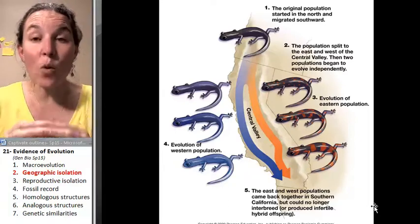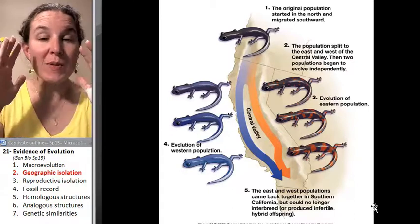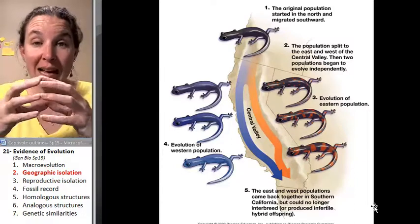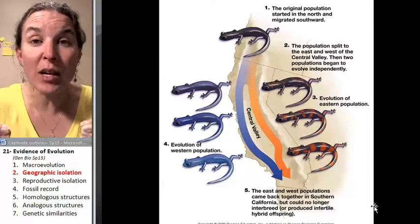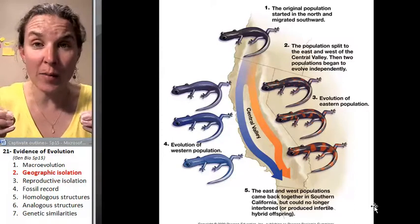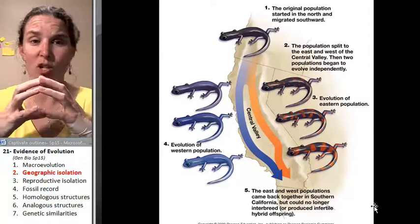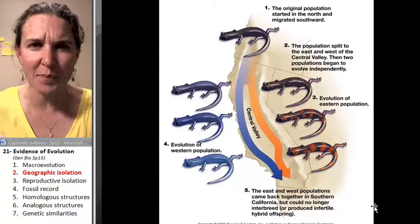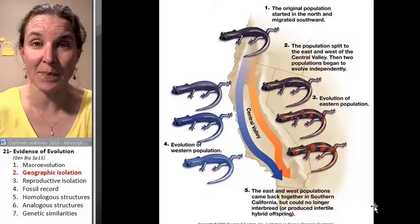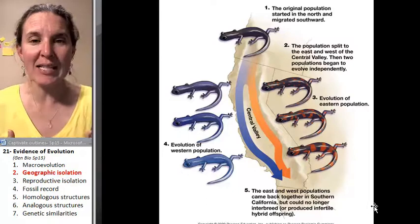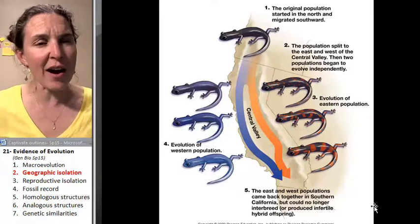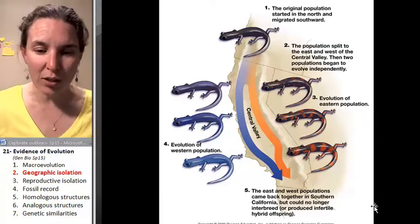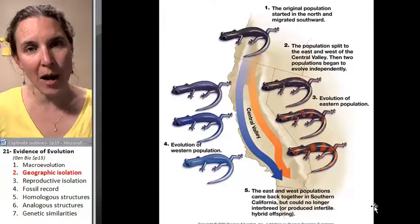For speciation to occur, somehow through some process, one population of critters has to separate and become reproductively isolated from the other population. We have to start out with one group that can totally make babies with each other, and then something has to happen to separate them most of the time. The first thing that happens is geographic isolation — something happens in a spatial sense that separates a population.